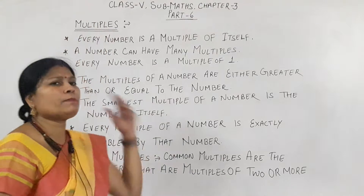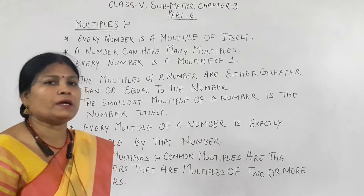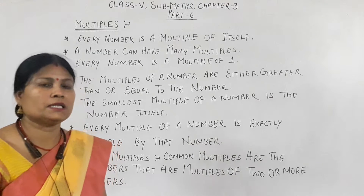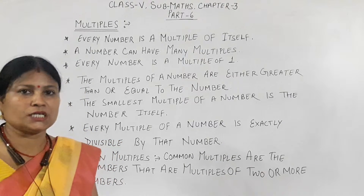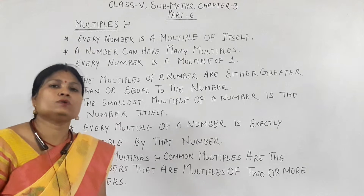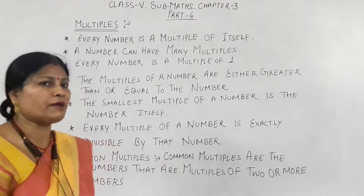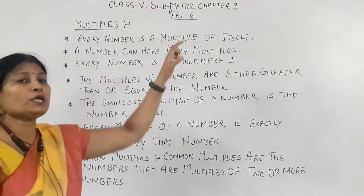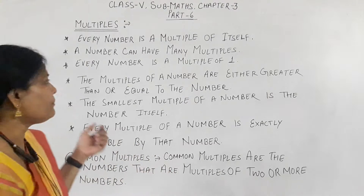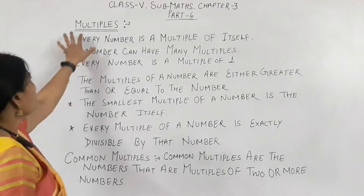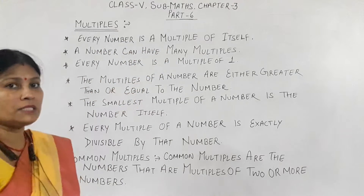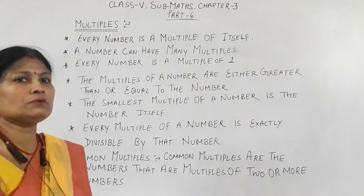So, multiples — everybody knows about multiples because from the beginning we have been speaking and learning the tables: 2 ones are 2, 2 twos are 4 — in this manner we find multiples. If we multiply two numbers, we get a multiple. Multiples have some rules and important things that we have to learn.